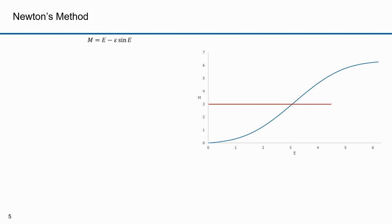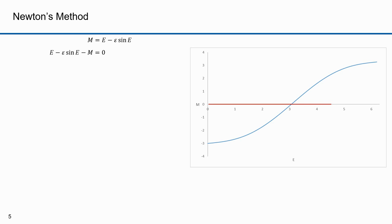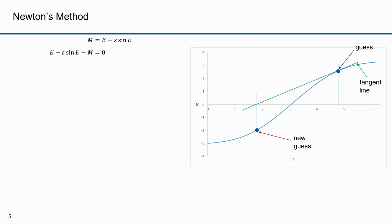Here's how Newton's method works. I start by expressing Kepler's equation so the result would be zero: e minus epsilon sine e minus m equals zero. I'll adjust the graph so the zero point of the y-axis is centered at the value for m. Now I'll make a guess for e at about 4.75. I draw a tangent line through the point corresponding to my guess, and where that tangent line intersects the x-axis is my next guess. That new guess has its own tangent line to determine the next guess, and you can see how this method converges on the result.